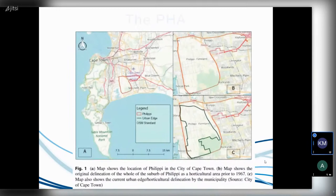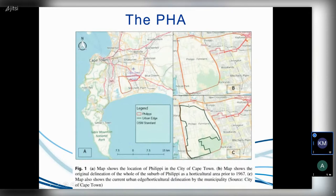Just to show you where we are located — this is within Cape Town, and you can see the PHA is that sort of pan-shaped area within this map of the whole Cape Town area. The red outline indicates the Philippi horticultural area, while the green line, which is the urban edge, shows areas outside that have now been urbanized. This middle part is really currently the most viable portion for farming.